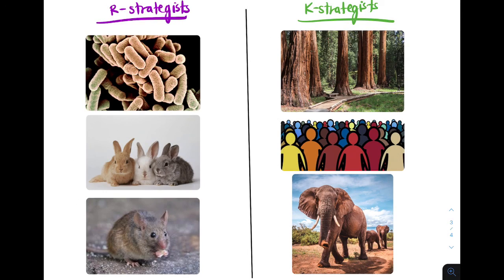Some examples of R strategists are bacteria, rabbits, and mice, whereas K strategists are sequoia trees, us, humans, and elephants.